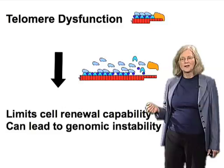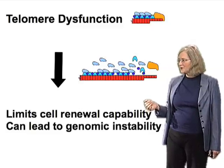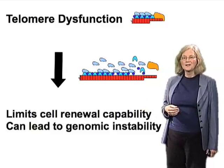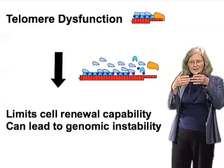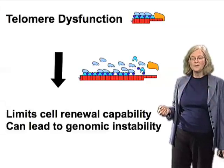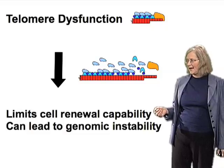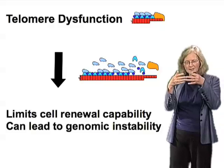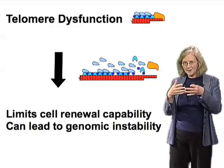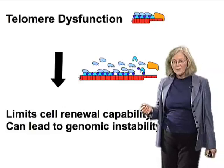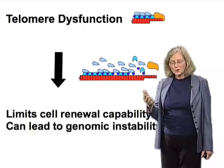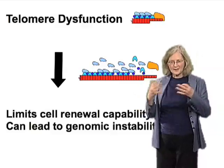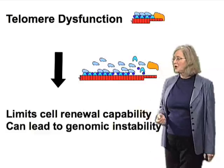If by chance the cell does continue to multiply, those telomeres become subject to the very kinds of fusions — the DNA joining events — that telomeres shouldn't allow to happen. That can lead to genomic instability, because the end-to-end joining of telomeres to themselves or to broken DNAs can cause chromosomes that fuse to each other to tear themselves apart as the cells divide, leading to genomic instability.